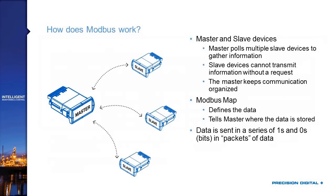Now let's talk about how this actually works. A Modbus system is made up of one master device and slave devices. There can be only one master on a Modbus system, but there can be multiple slaves. The master controls all communication — thinking back to the room-full-of-people analogy, Modbus puts one person at the front of the room as the master, who makes all requests of everyone else and gives everyone else permission to speak.